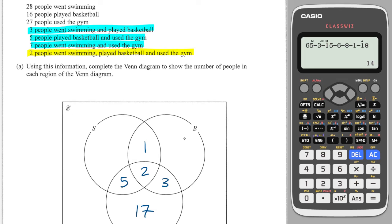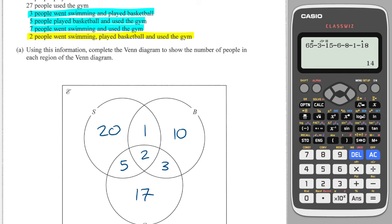16 people used basketball and at the moment we've got 1, 2, 3, which makes 6, so we're going to need 10. 28 people went swimming and we've got 5, 2, and 1, which is 8, so we're going to need 20 in here. Then to finish off we've got to figure out how many people go on the outside. I'll add them all up: 10 plus 3 plus 2 plus 1 plus 17 plus 5 plus 20, and that's 58. It was 120 people who were asked, so 62 goes on the outside.